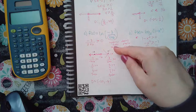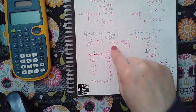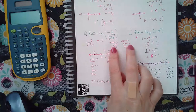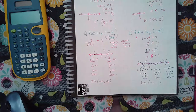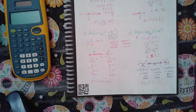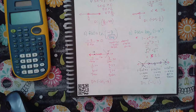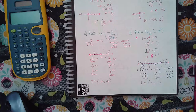Depending on the problem, sometimes your variable is in the numerator and you'll get solutions there; sometimes variables appear in both numerator and denominator, giving two numbers on the number line and three test regions — just like this example. We did cover rational inequalities in a previous topic, so all of this is really just an extension and application of that same process.